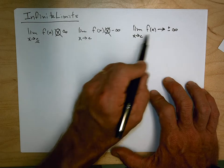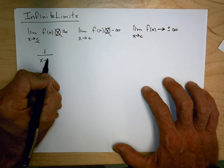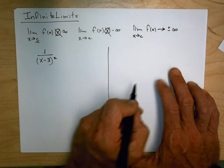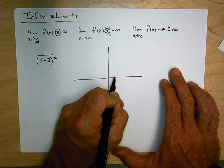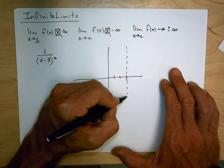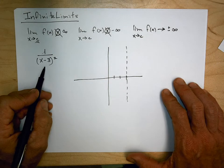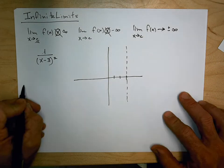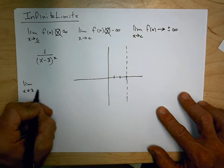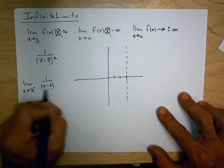Let's take a look at a specific example. If I have the function 1 over (x minus 3) squared, let's go ahead and look at the graph. It's going to have a vertical asymptote at x equals 3, which we will talk about a little bit later. Let's think about what's going to happen here and look at the one-sided limits.